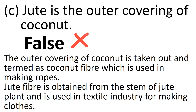Statement C: Jute is the outer covering of coconut. We are aware that the outer covering of coconut is taken out and termed as coconut fiber, which is used in making ropes. However, jute fiber is obtained from the stem of the jute plant and is used in the textile industry for making cloths. This makes statement C a false one.